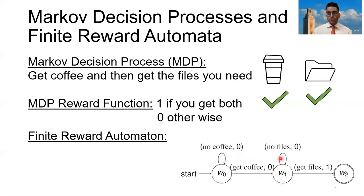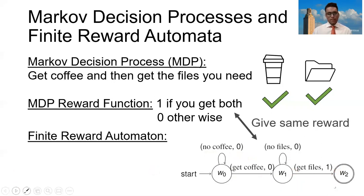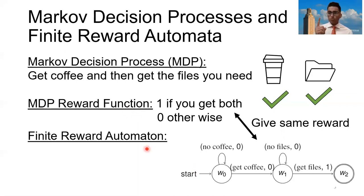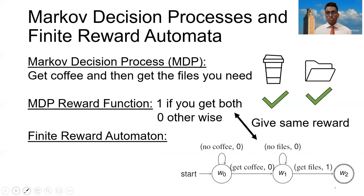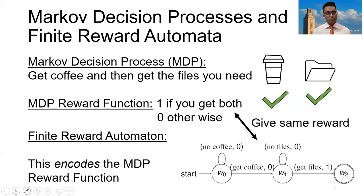Once we're in state one, if we don't get files, we stay in this state. And if we get files, we move to the final state, w2 — the termination state. Once we get to this state, we actually get a reward of one. Both the MDP reward function and this finite reward automaton give rewards for similar actions. If you get coffee and get the files, both will give you a reward of one. If you don't get coffee but get the files, both give you a reward of zero. When both the reward function and an automaton have the same rewards, we say that the reward automaton encodes the MDP reward function.